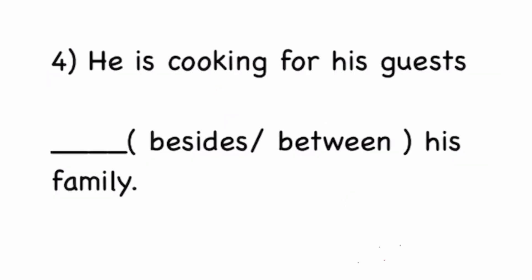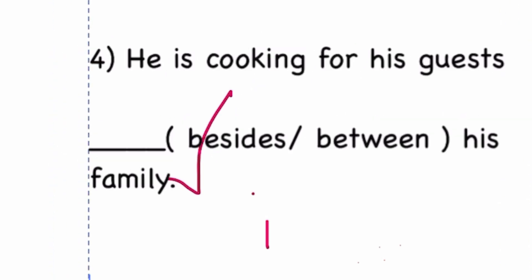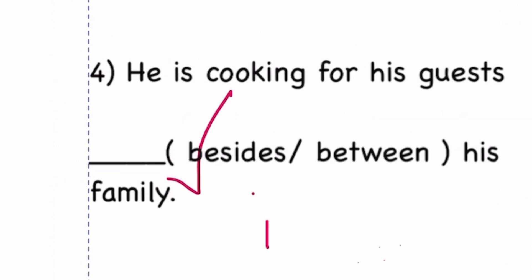Next question is: he is cooking for his guests besides or between his family. Between, as I said, means in the middle of two. Besides means in addition to. That is, somebody else is there, the presence of somebody else or something else. So the correct answer is, he is cooking for his guests and also his family. So besides is the correct option. Besides means in addition to.